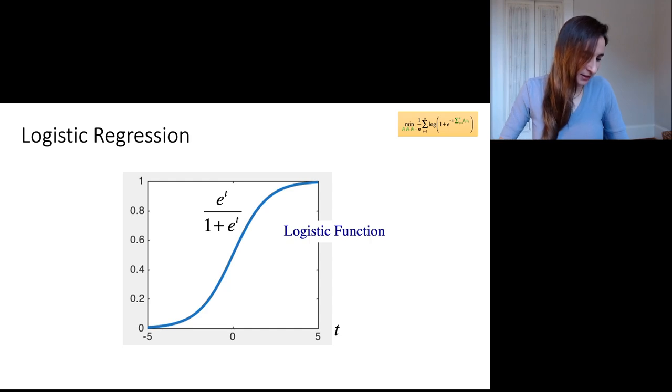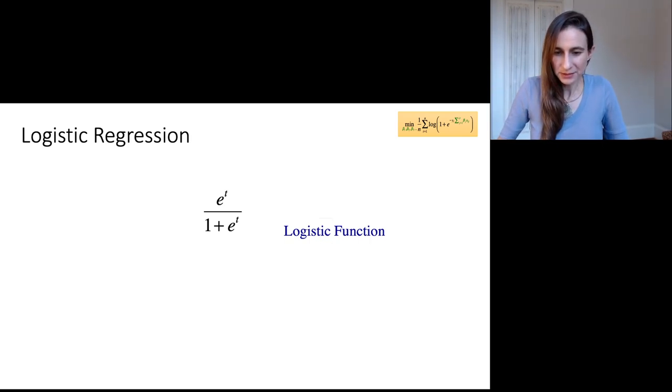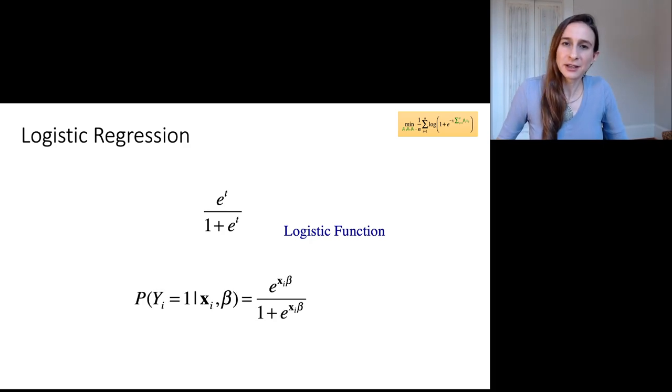So it's a really useful function because it gives you any real number, like I said, gets mapped to a probability. So we can use it for probabilistic modeling. Okay, and in particular, we're going to use it to model the probability for logistic regression, that the probability that y equals one given x and some coefficients beta.